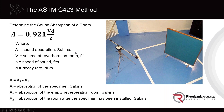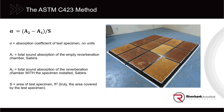C423 also provides the Sound Absorption Average, which is a modernized variation of NRC. For a flat product or panel tested by ASTM C423, we can determine something called sound absorption coefficients — which are really Sabins per square foot: the total absorption measured divided by the area of the sample.